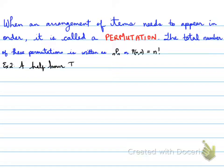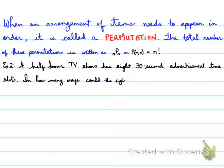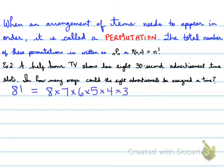Example 2. A half-hour TV show has 8 30-second advertisement time slots. In how many ways could the 8 advertisements be assigned a time? Well, we basically, the answer will be 8 factorial. 8 factorial, which will turn out to 40,320.